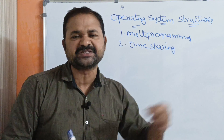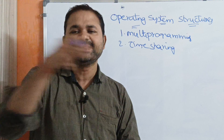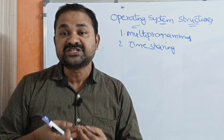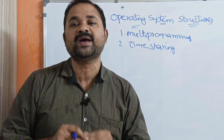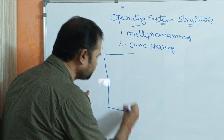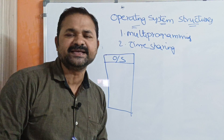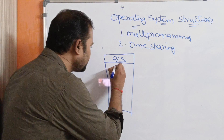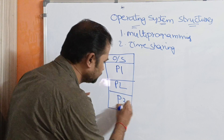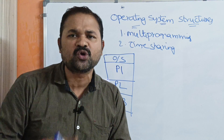The name itself specifies the meaning. Multiprogramming means placing multiple programs in the main memory so that we can utilize the efficiency of the CPU in an effective manner. We know that main memory is divided into two parts: the first part is the operating system, whereas the second part is user programs. So multiprogramming means keeping more number of programs in the main memory.